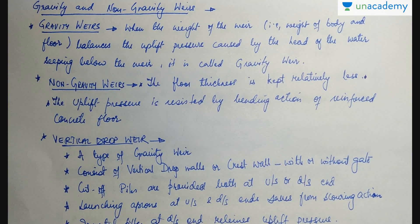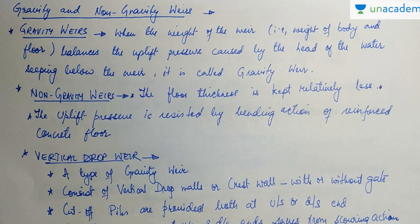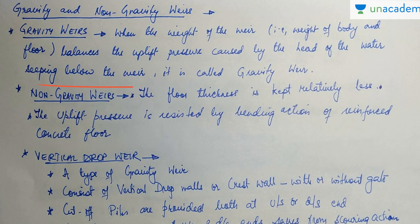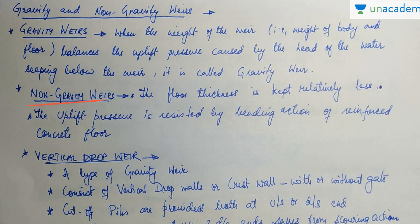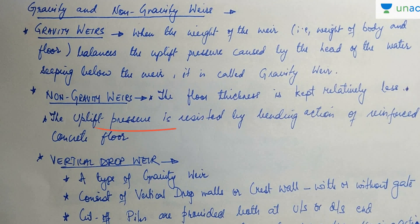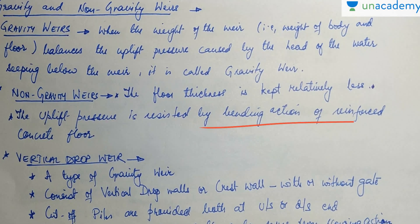In a gravity weir, the weight of the weir — that means the weight of the body and floor — balances the uplift pressure caused by the head of water seeping below the weir. In a non-gravity weir, the uplift pressure is resisted by the bending action of the reinforced concrete floor, and the floor thickness is kept relatively less.